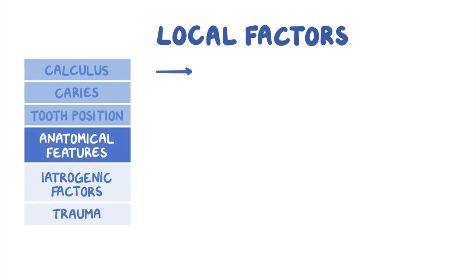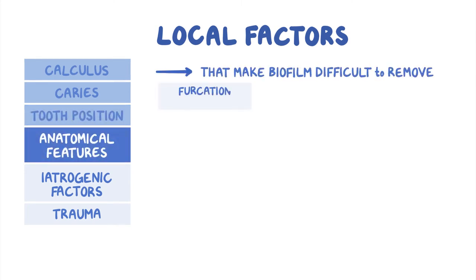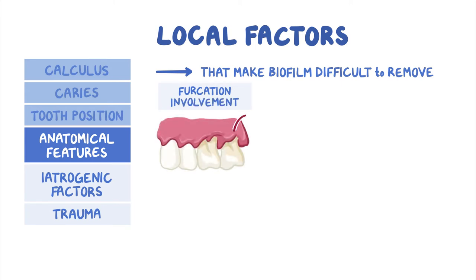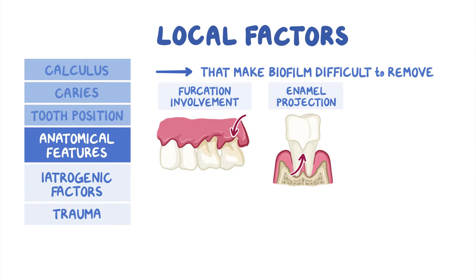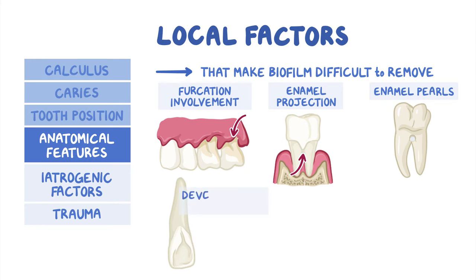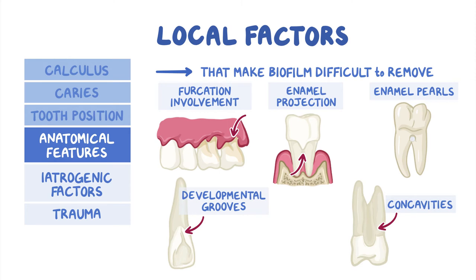Anatomical factors that make biofilm difficult to remove include furcation involvement, which refers to bone loss in the furcation area — the place where the roots of multi-rooted teeth diverge. Enamel projections are extensions of enamel in the cervical region toward the furcation area and can lead to early furcation involvement. Enamel pearls are accumulations of enamel in locations where it is not normally found. Developmental grooves are sharp depressions of the tooth surface that can extend to the root, especially common in maxillary lateral and central incisors. Concavities are linear depressions of the root surface typically located on the mesial surface of maxillary first premolars.